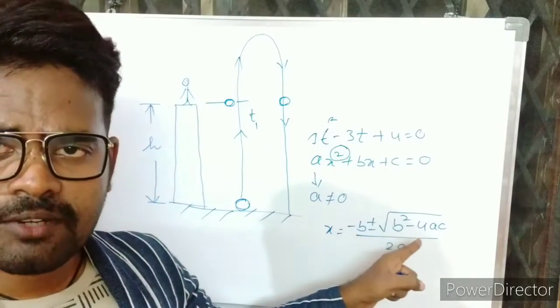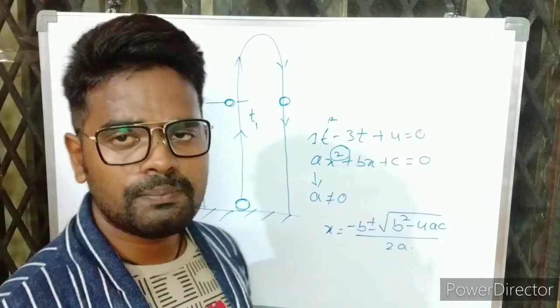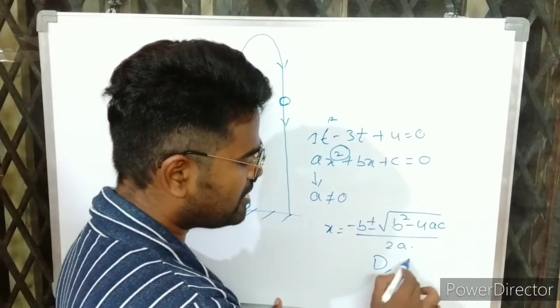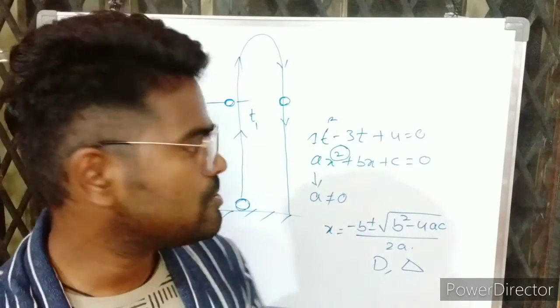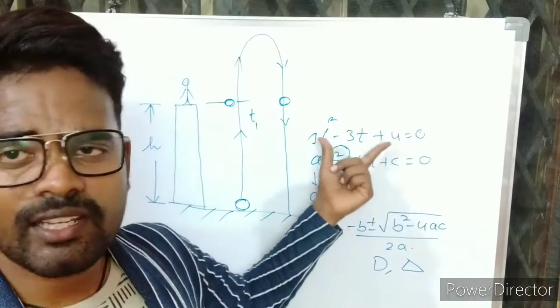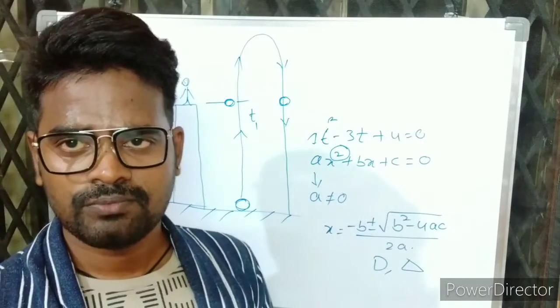This part we can call it as discriminant. D is the letter. Otherwise we can represent it with delta. Delta we can represent. So based on this formula we can easily find out what is that time value.